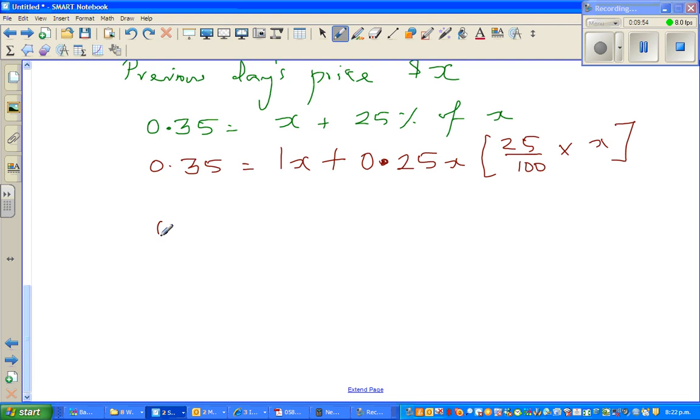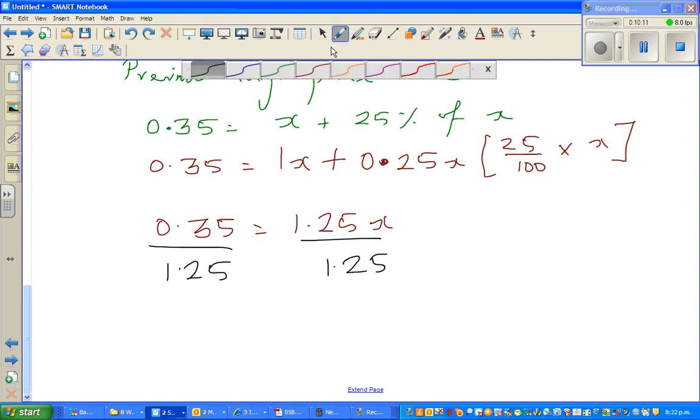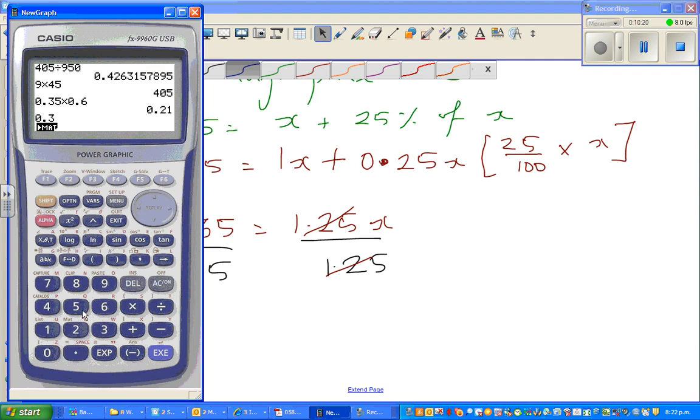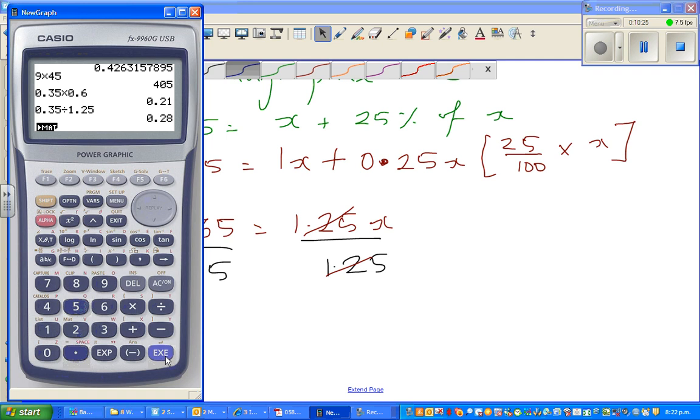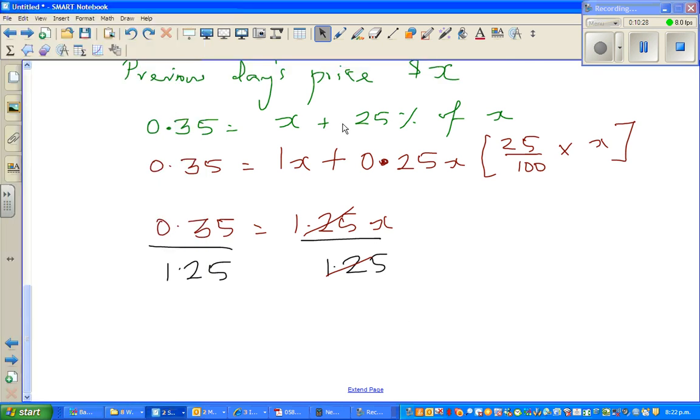So 0.35, 1x plus 0.25x is 1.25x. So if you divide this side by 1.25, let me divide this side by 1.25. So this and this gets cancelled. So calculator 0.35 divided by 1.25. You should always check whether the answer makes sense. So 0.28. So x is 0.28.